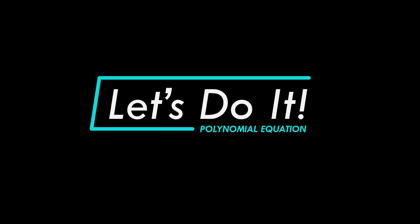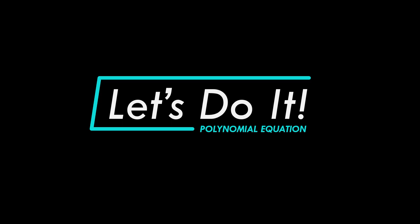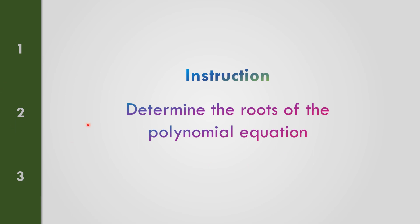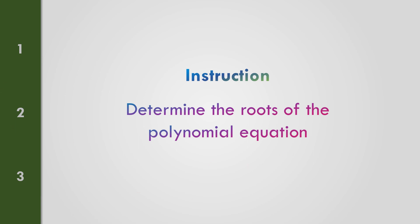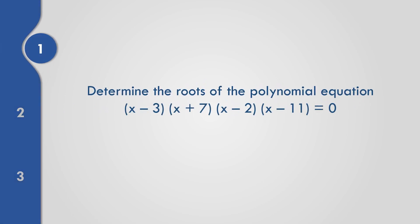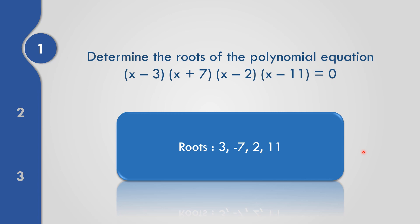Let us apply what you have learned about polynomial equations. Instruction: Determine the roots of the polynomial equation. Number 1: (X minus 3)(X plus 7)(X minus 2)(X minus 11) equals 0. The roots are 3, negative 7, 2, and 11.